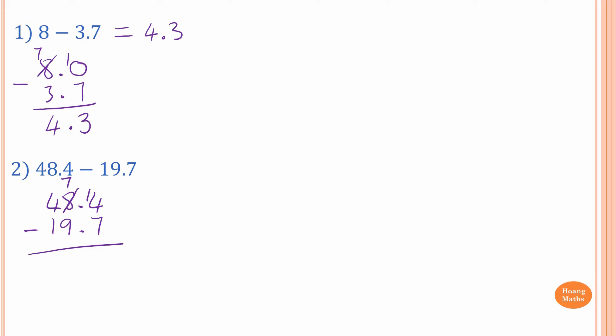So you start from 7 and count up all the way to 14. You go 8, 9, 10, 11, 12, 13, 14 — that is 7. And then the decimal point, we write that down first.